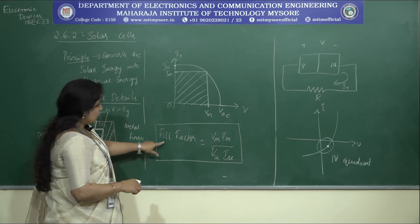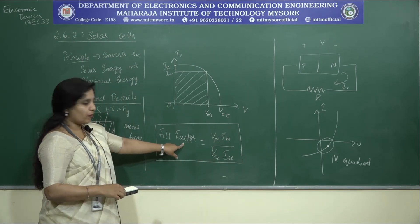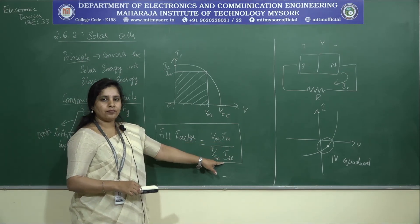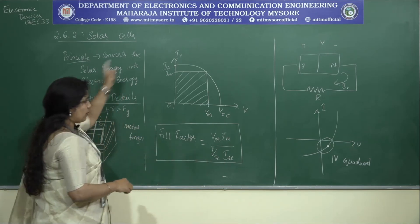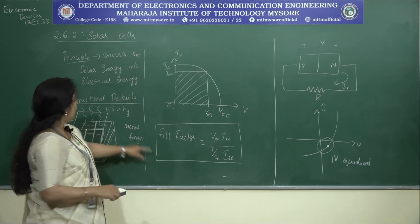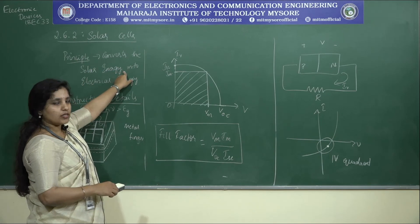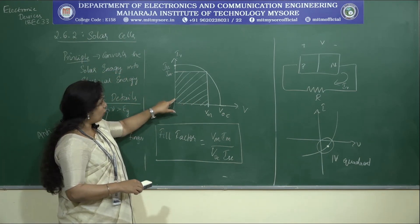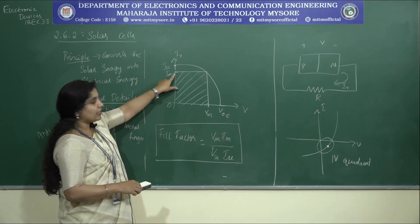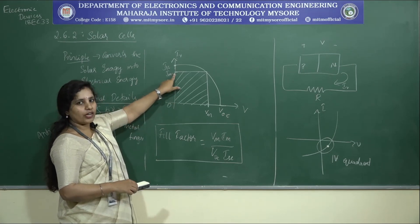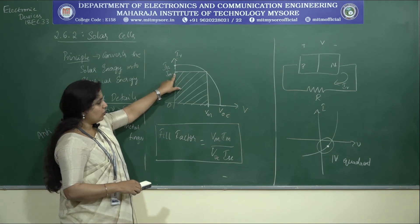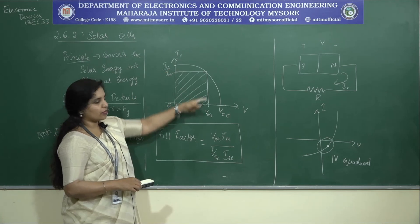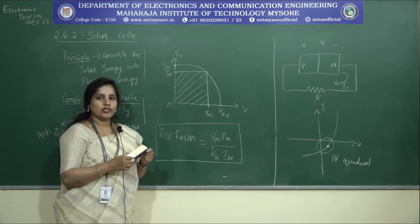The fill factor relates Vm, Im, VOC, and ISC. Higher light intensity produces higher current; lower light intensity produces lower current. These are all the aspects to be aware of regarding solar cells — constructional details, working principle, and IV characteristics.